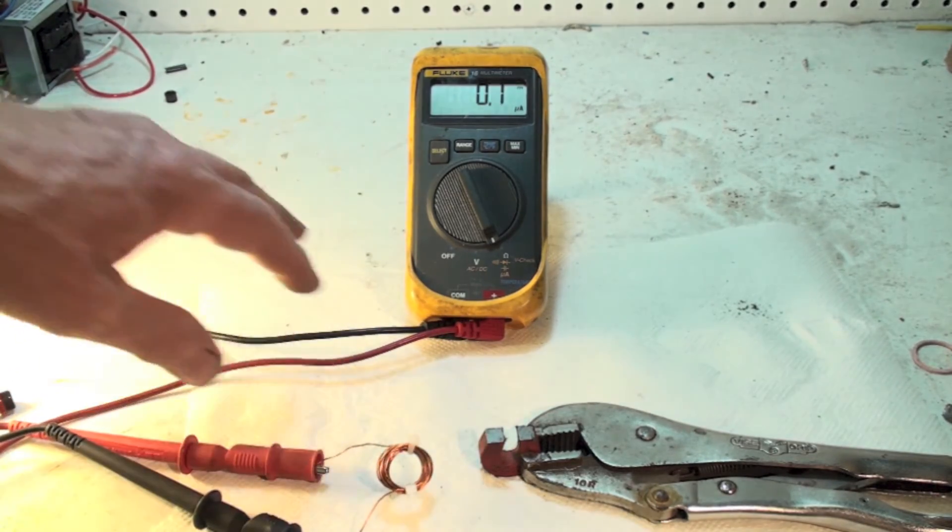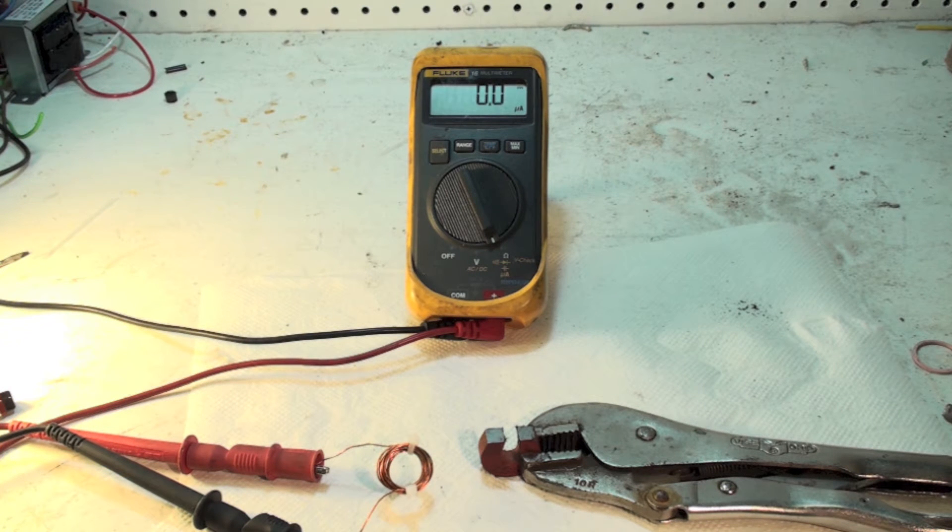Now what this is going to do is increase the number of times that the wire has crossed a magnetic field. And so every time this moves, instead of inducing a very small amount of power, it will tend to induce more power because there's more windings.